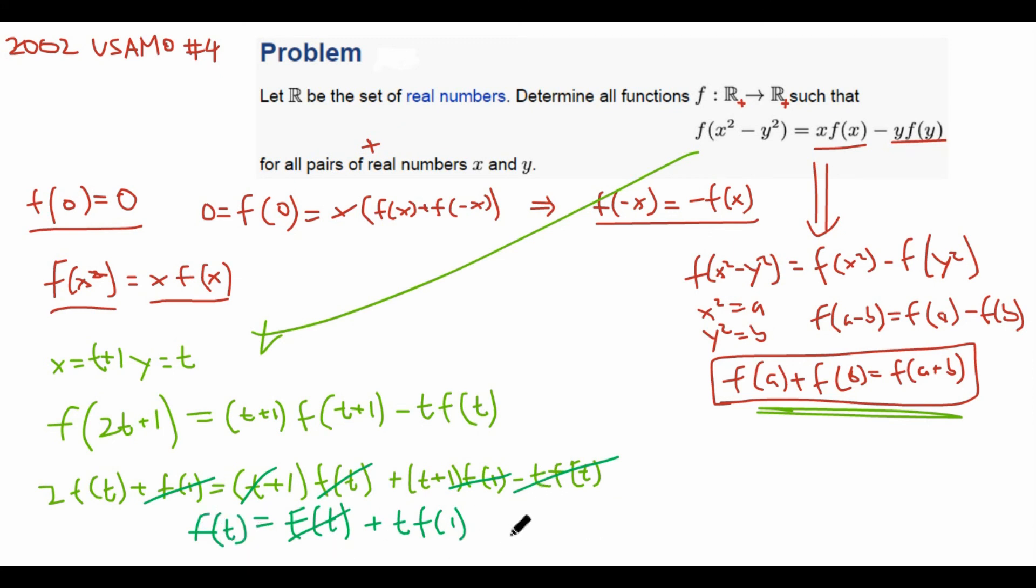But wait. This just means we're done. Because if we let f(1), f(1) is just a constant c. So that means f(t) equals c times t. And that characterizes all possible solutions of this function f. So we're done. So basically, the solutions are just all linear functions that go through the origin.